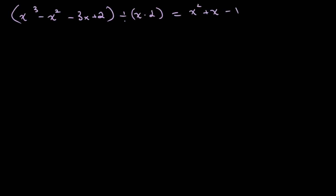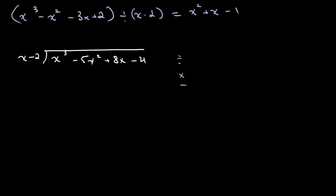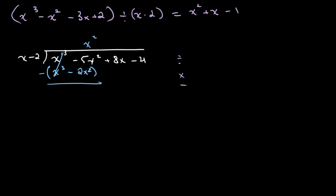Let's look at another example. Let's say we have x cubed minus 5x squared plus 8x minus 4, and we want to divide this by x minus 2. Following the same process of divide, multiply, subtract: we divide x cubed by x to get x squared, multiply x squared by x minus 2 to get x cubed minus 2x squared, then subtract. The x cubed terms cancel, and minus 5 minus negative 2 gives us minus 3x squared plus 8x minus 4.